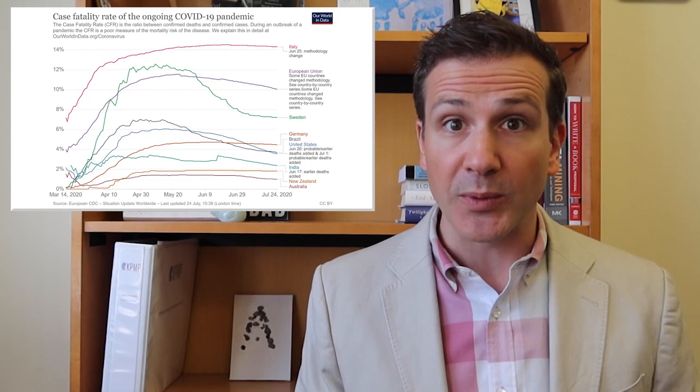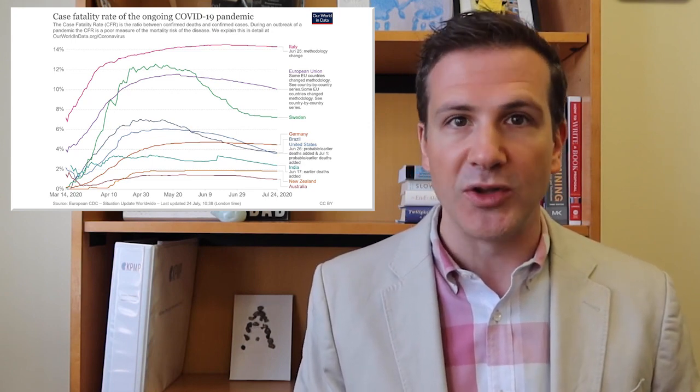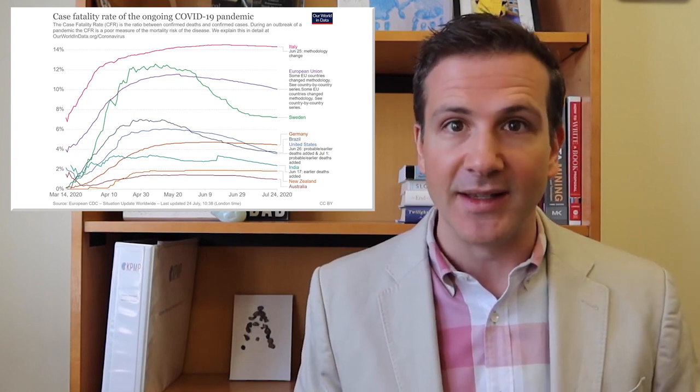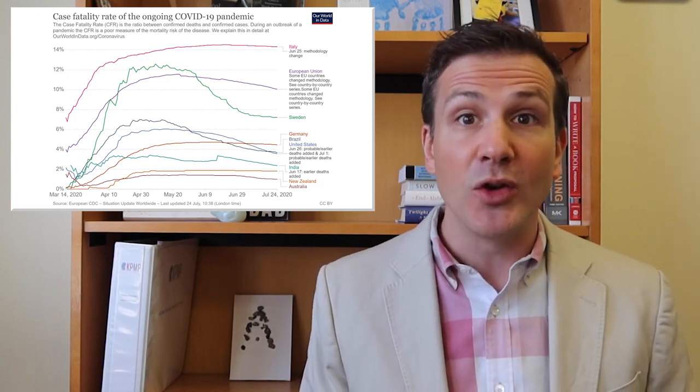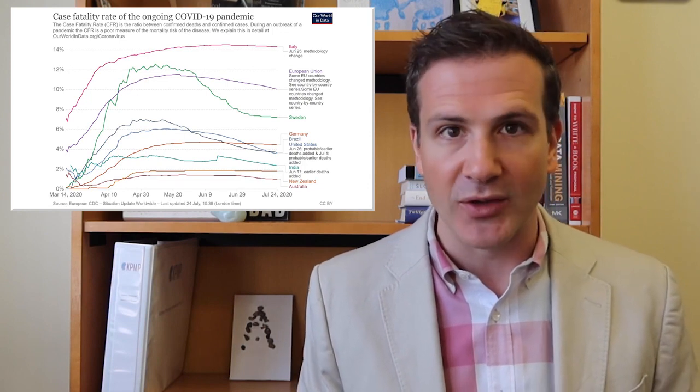If you were to rank the countries of the world with respect to case fatality rate, you'd find the U.S. doing okay, about on par with Germany and Brazil, way better than Italy and worse than New Zealand and Australia. This is not to say we're containing the virus well, just that among those who get it, the chance of survival is about as good here as those other countries.